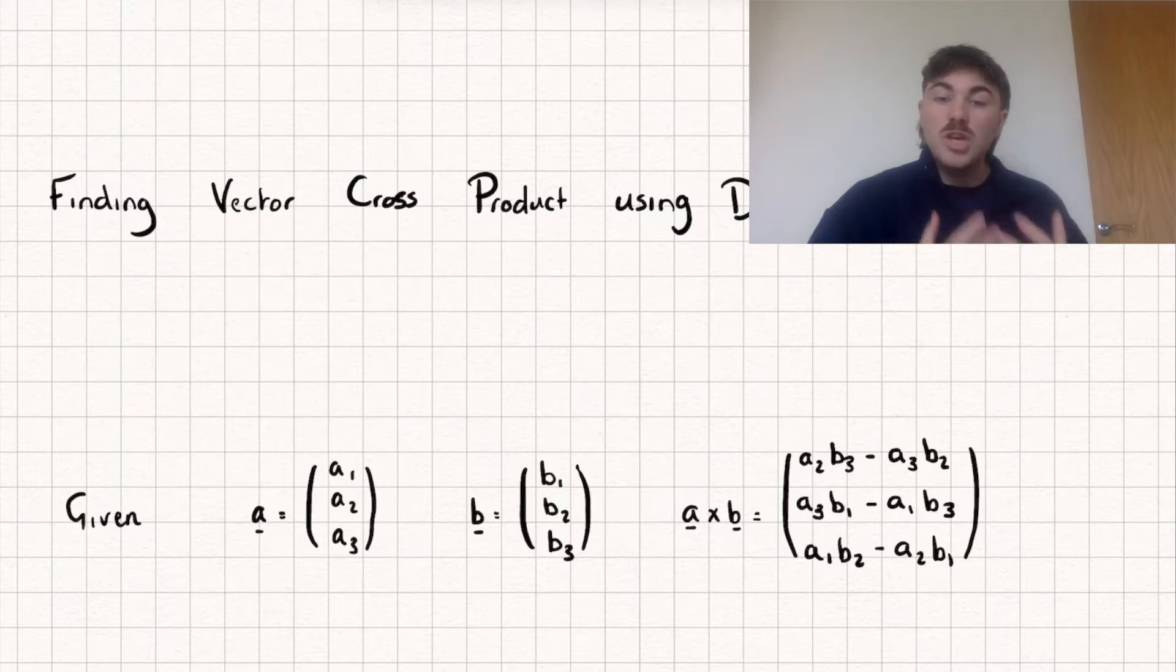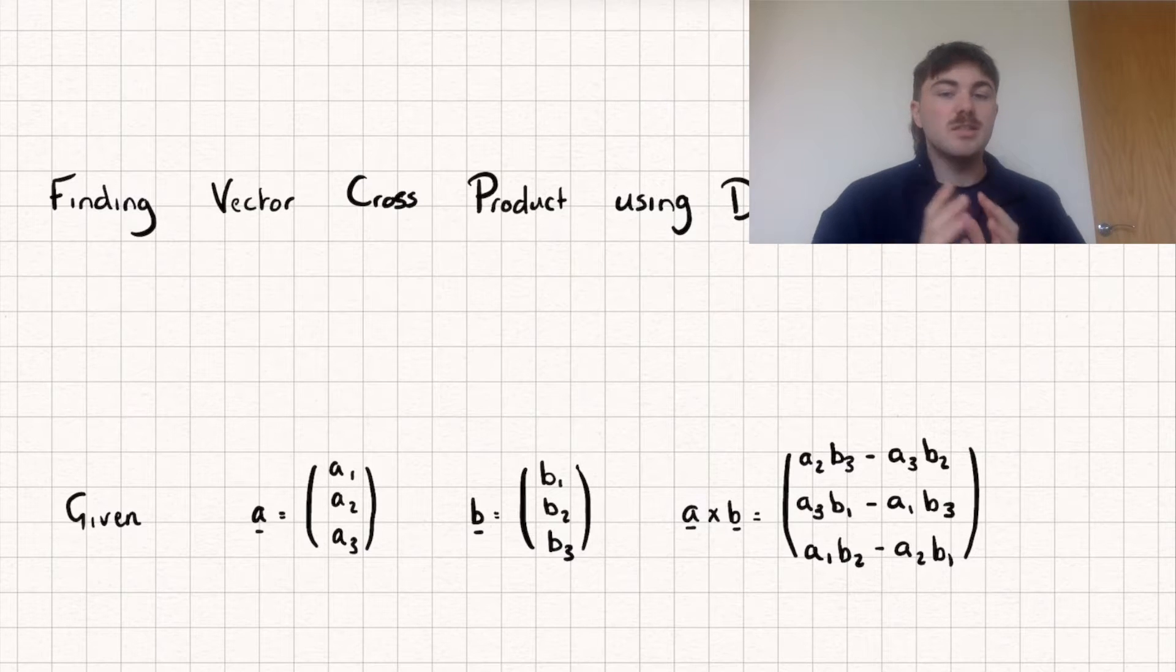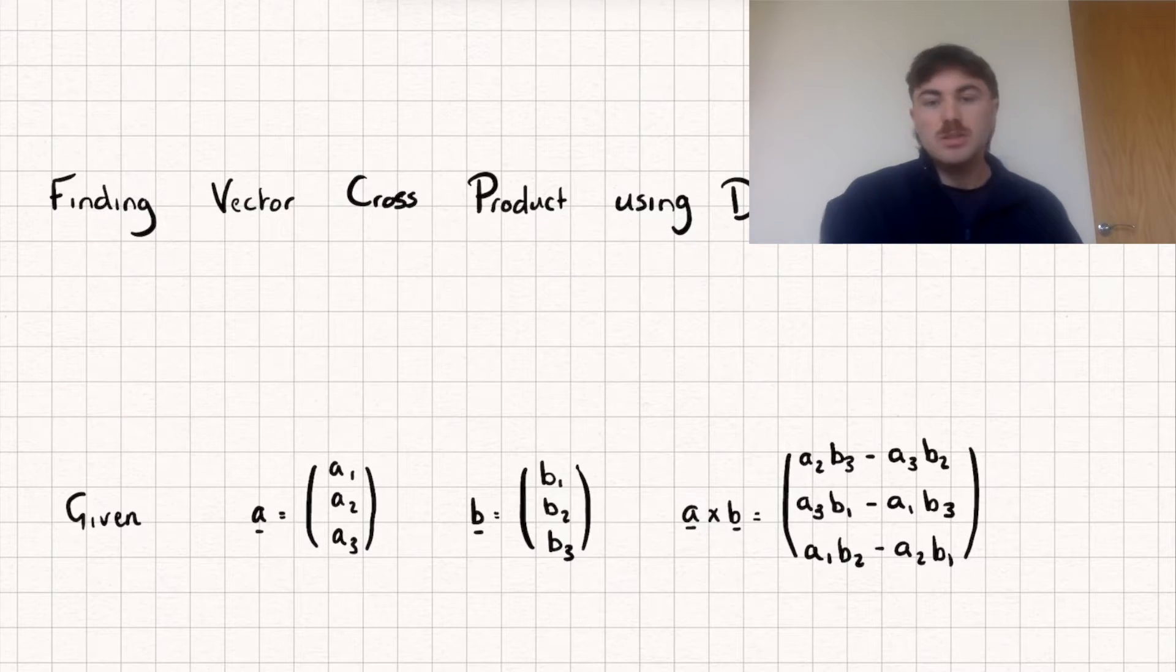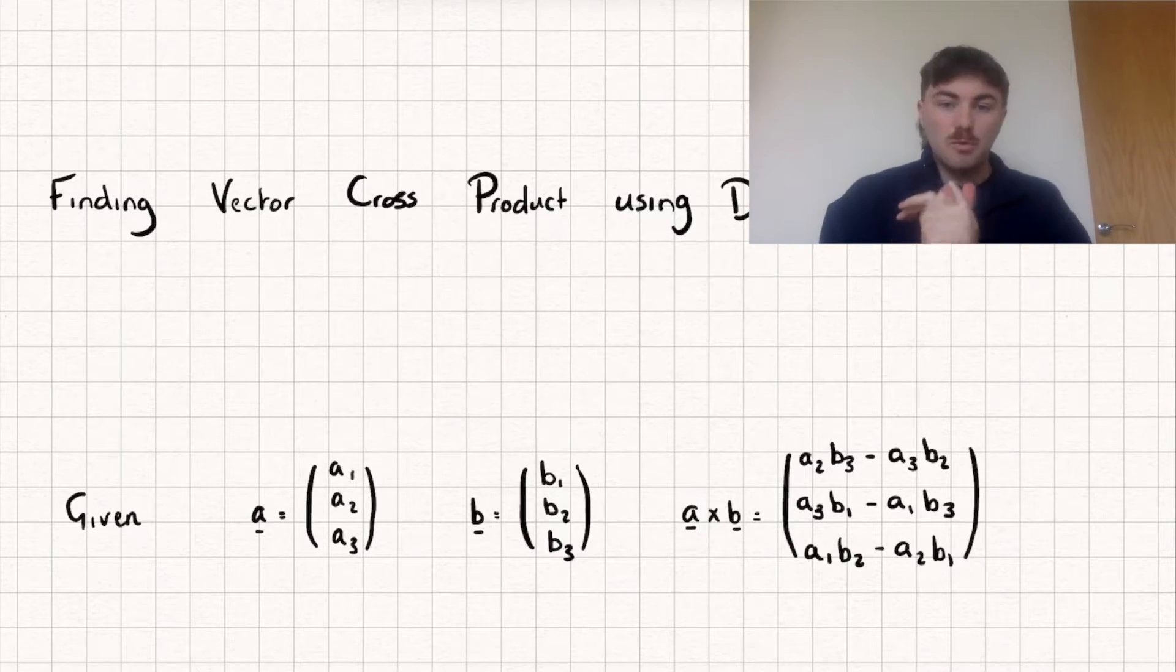In this video we're going to be taking a look at an alternative method to find the vector cross product, which is by using the determinant of a three by three matrix. I'll show you a generic example first and then an actual example with two vectors.